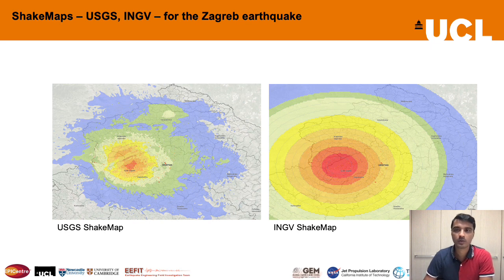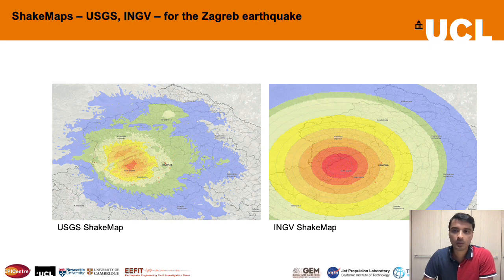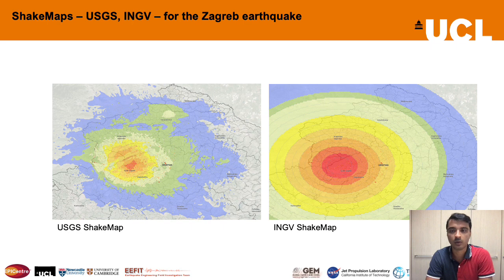A shake map provides a spatial representation of the distribution and intensity of the ground shaking field associated with the earthquake, employing a combination of recorded and estimated shaking values. This information is critical for quickly assessing the extent of affected areas and determining which areas might be hardest hit, forming a valuable input in any rapid damage estimation framework. The shake map intensity at the location of each building is one of the input features for the machine learning models. Two shake maps were available for this event — one from the USGS and one from the INGV in Italy — where the USGS map also incorporates potential amplification or de-amplification of shaking due to local site effects.